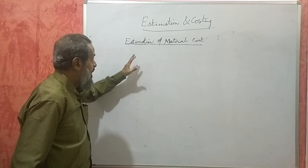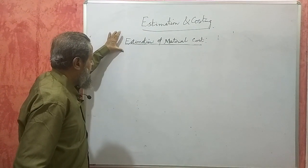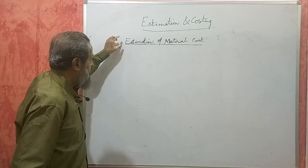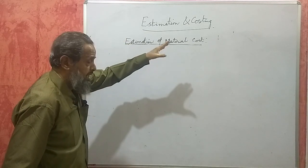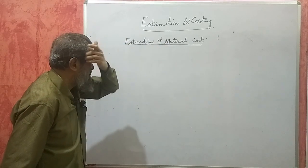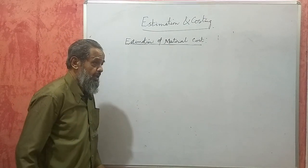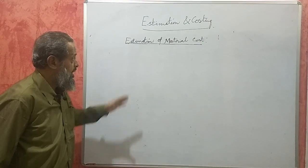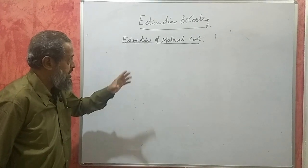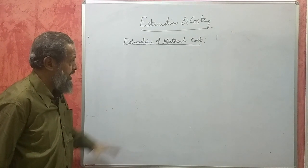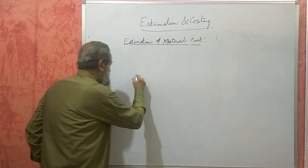Friends, this is the second unit in estimation and costing, which covers estimation of material cost. In this, we are definitely going to get a problem. What they give is a component — a machine component, something like this.